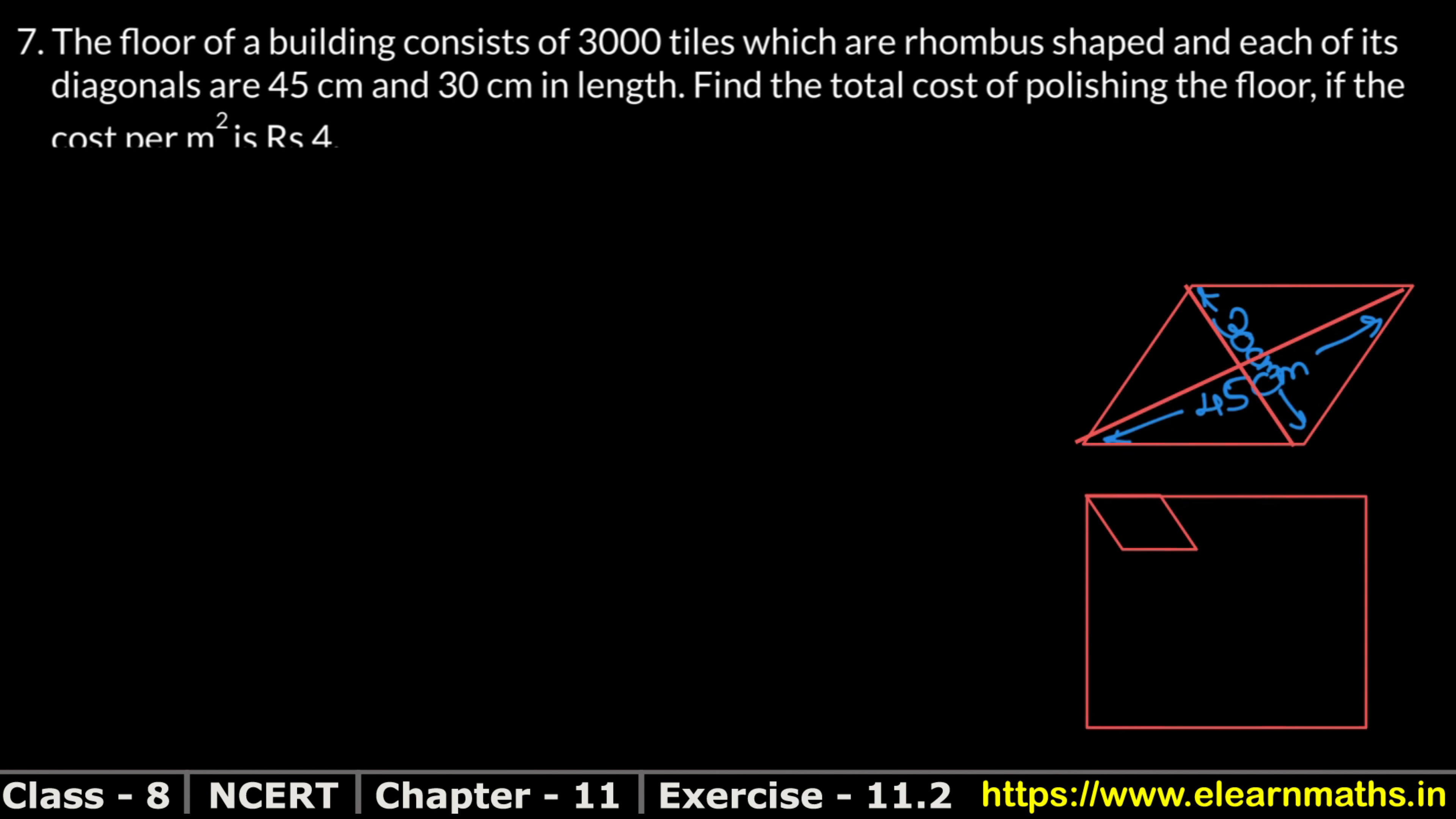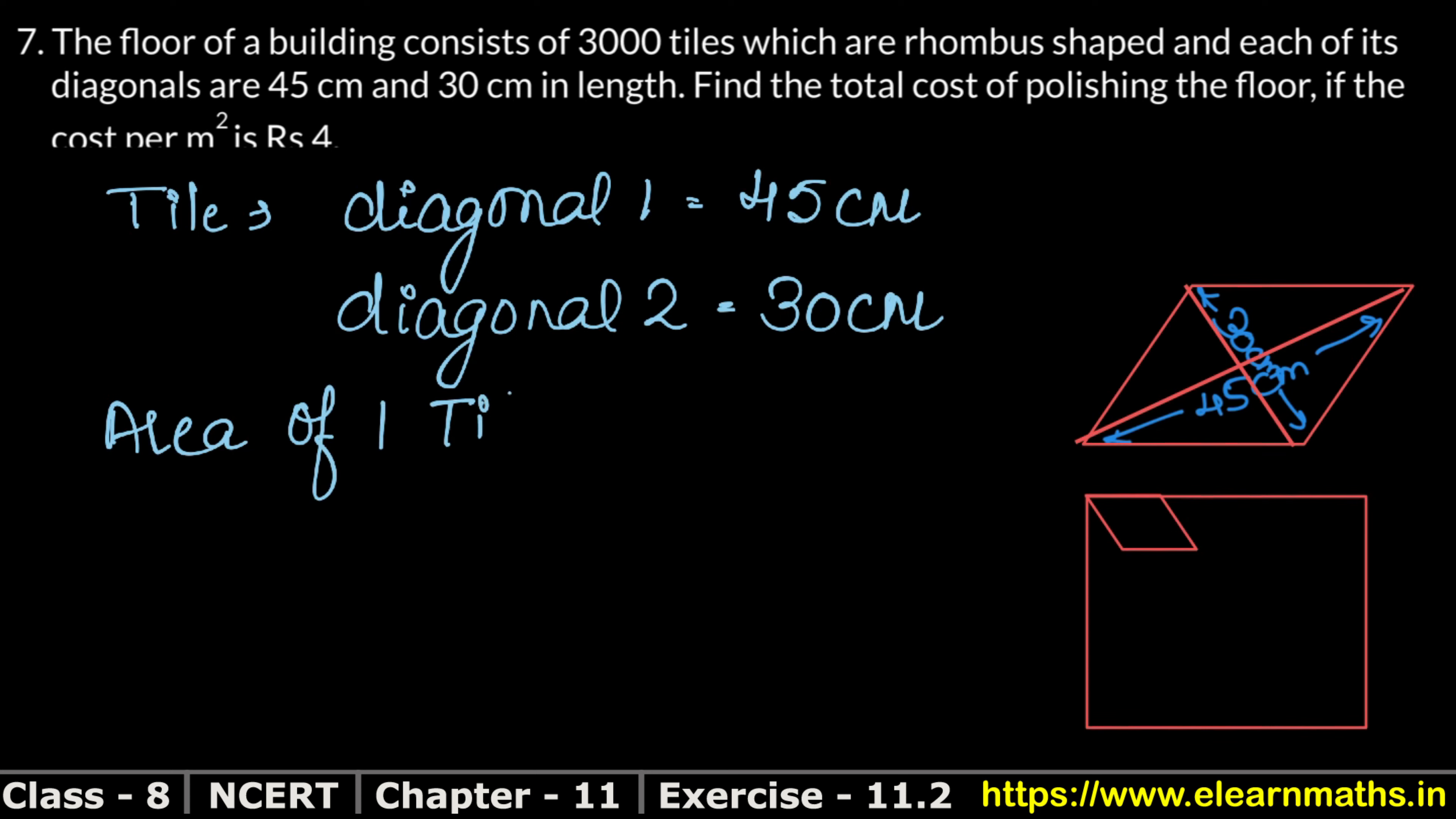We will find the area of one tile. For the tile, we have diagonal 1 which is 45 cm and diagonal 2 which is 30 cm. We have to find the area of the tile. So the area of one tile - we know that the area of the rhombus is given by half into diagonal 1 into diagonal 2. So half, diagonal 1 was 45 cm and diagonal 2 was 30 cm.